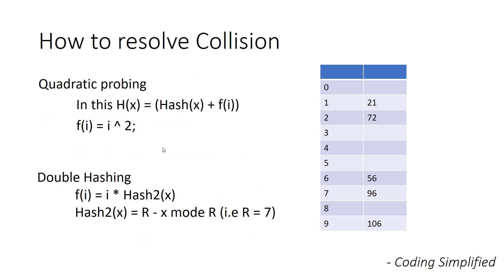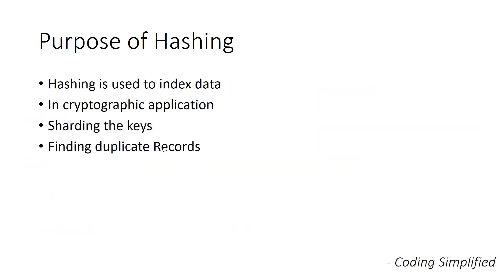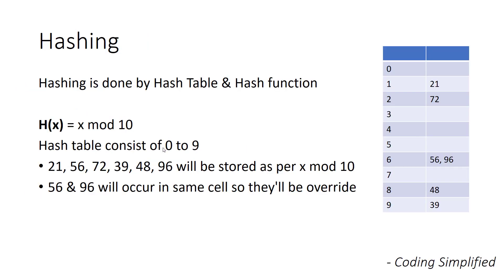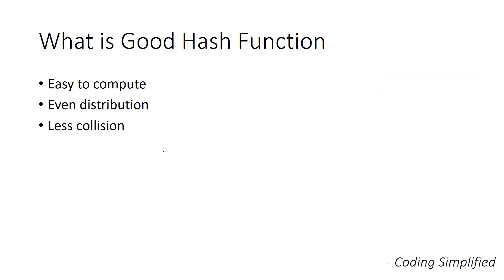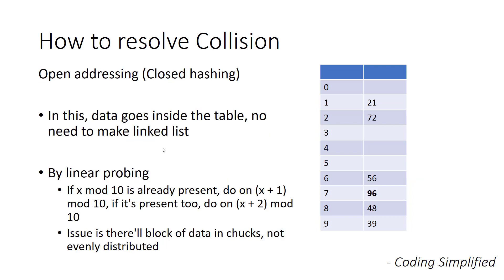That's it for hashing. We saw the purposes of hashing, then how hashing is done and what actually happens, then the hash function and hash table, what is a good hash function, and in the case of collision — what we can do: linear probing, quadratic probing, or double hashing. If you have any doubt or anything that comes to mind, please write in the comment section and we will try to answer. Thanks guys, and if you found this helpful, please subscribe the channel for more such videos.